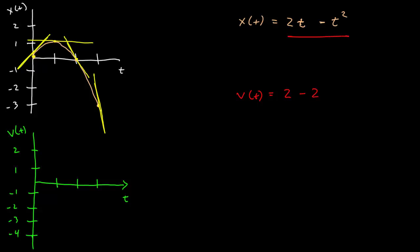So, I can go ahead and plot that. At t equals 0, this is 2. At t equals 1, this is 0.